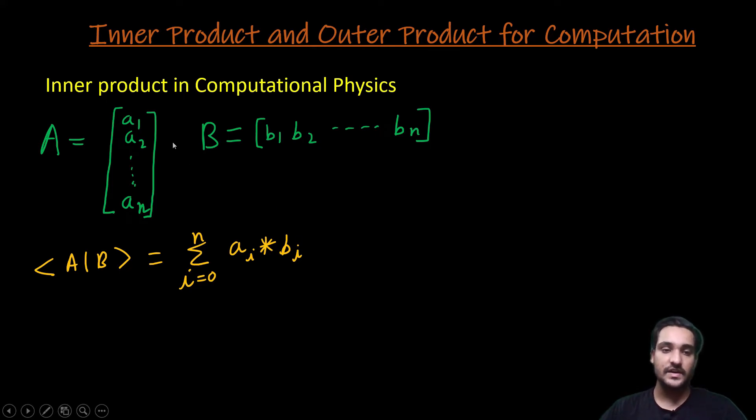Here, what this means is that A1·B1 plus A2·B2 till AN·BN will be the inner product of these two vectors.